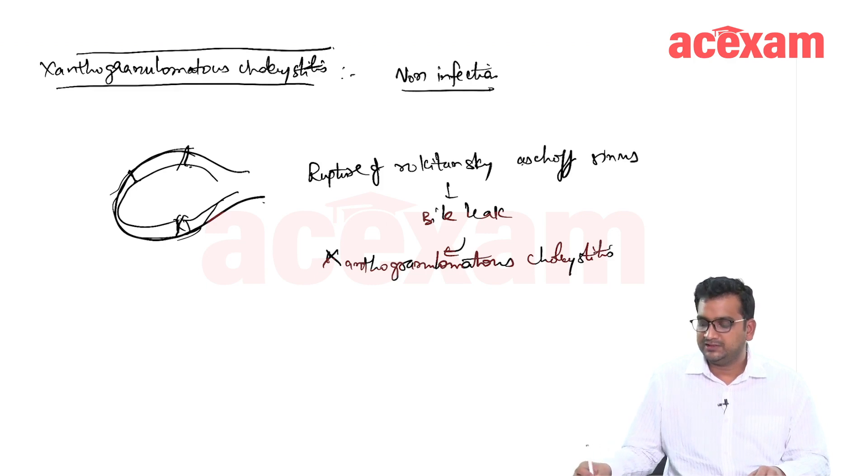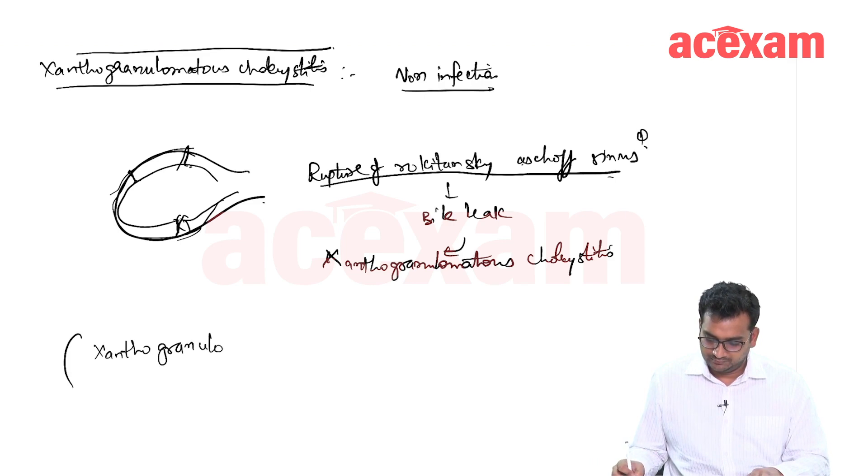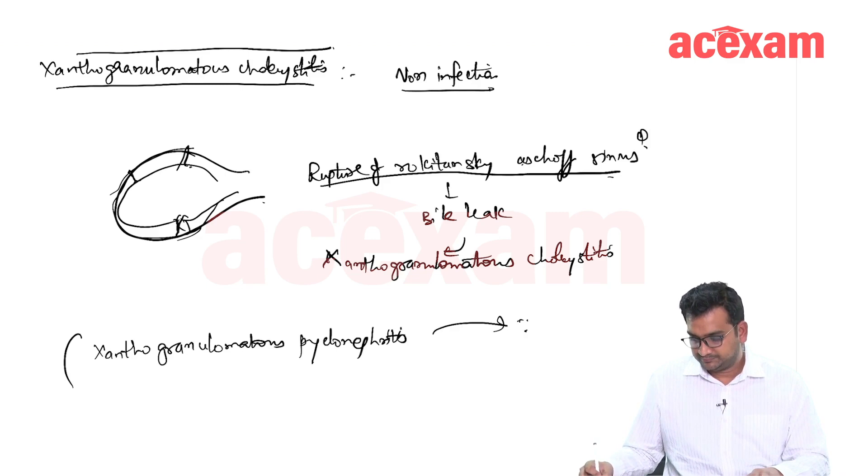That occurs because of rupture of Rokitansky-Aschoff sinuses, not because of any infection. On the other hand, Xanthogranulomatous pyelonephritis is infectious and it occurs most commonly because of Proteus infection.